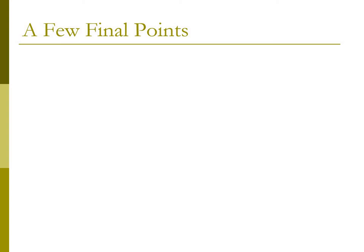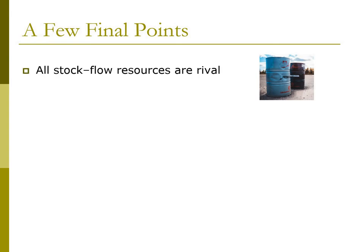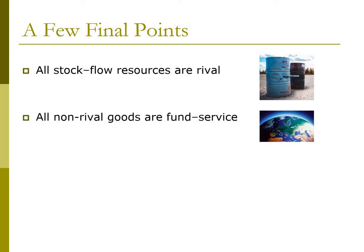There are a few links among the concepts I've introduced that are worth noting. The first is that all stock flow resources are rival — think of fossil fuels, which are rival and the stock is diminishing. All non-rival resources are fund service resources — think of the ozone layer, which is a non-rival fund service resource.